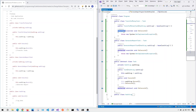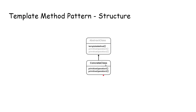To summarize, here is the structure for the Template Method Pattern. We have an abstract class which contains the template method, which is public and available to be called from outside. It also has abstract methods — for example, PrimitiveOperation1 and PrimitiveOperation2. A subclass inherits from this abstract class and can override these primitive operations. That is the overall structure for the Template Method Pattern.